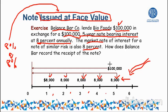And at the end of the fifth year, the Balanced Bar company is also expecting $100,000 back. So that's the full data of the numerical.